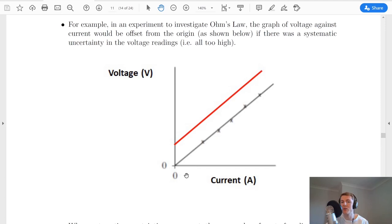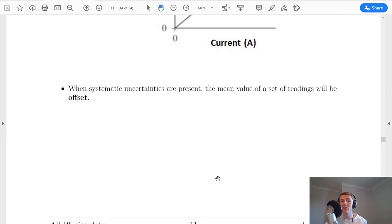Looking at another example, if we were to carry out an experiment on Ohm's law and plot some values of voltage against current on a graph, we would expect to get a straight line through the origin. However, if you had voltage readings that were all too high, because of a faulty voltmeter for example, then your line would not be straight through the origin, and in fact would be offset from the origin by a certain amount. So the line would appear up here. Or for example, let's say your current values were all too high, then instead of the line over here, the line would be over this side instead. And lastly, remember that when systematic uncertainties are present, the mean value of a set of readings will be offset.